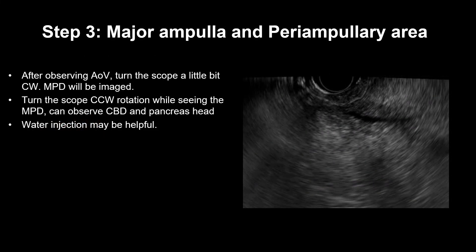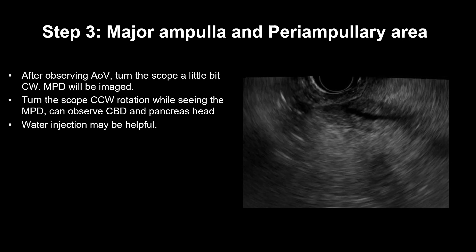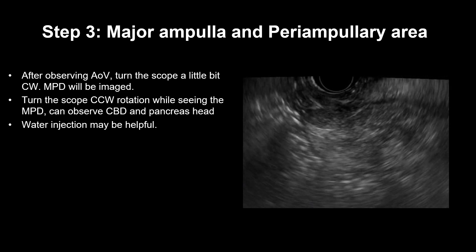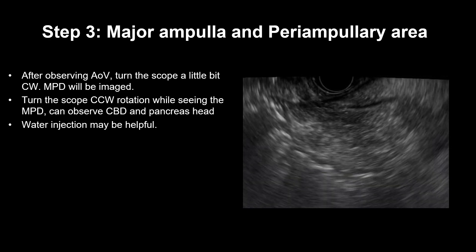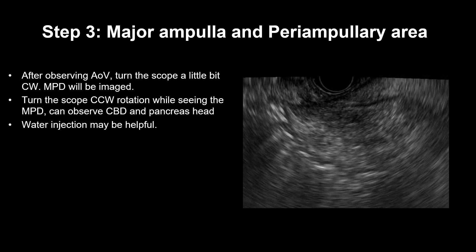Step 3: ampulla of Vater and periampullary area. After observing the ampulla of Vater, turn the scope a little bit clockwise — we can see the main pancreatic duct area. Turn the scope counterclockwise — we can see the CBD area. Water injection may sometimes be helpful to visualize the ampulla of Vater and the pancreatic head area.